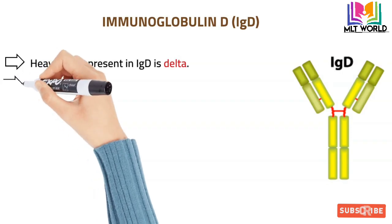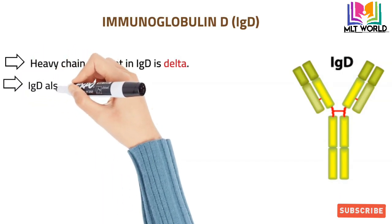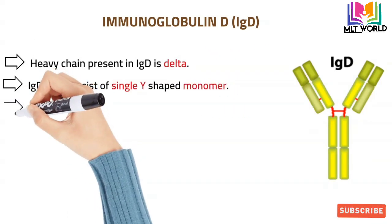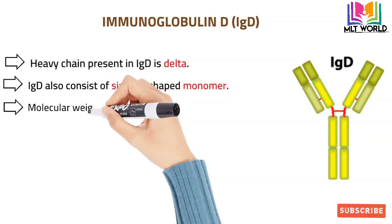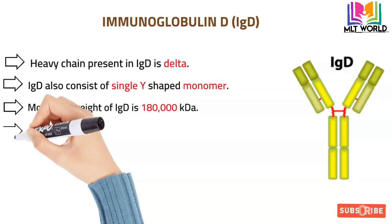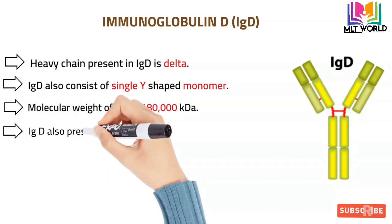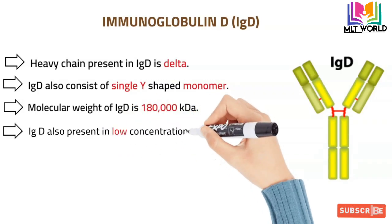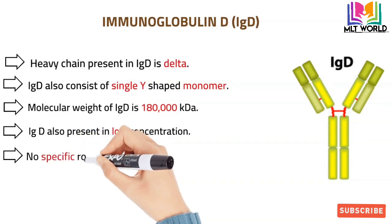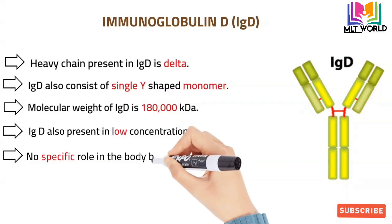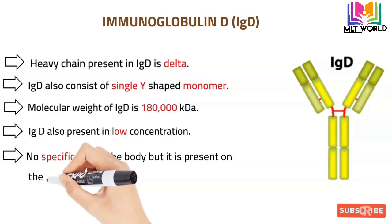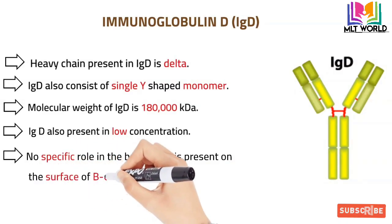The last immunoglobulin is IgD. The heavy chain present in IgD is the delta type, and IgD consists of a single Y-shaped monomer. Its molecular weight is 180,000 KDA, still bigger than IgG. IgD is present in very low concentration in the body, and no specific role has been clearly indicated yet, but it is found on the surface of B cells.